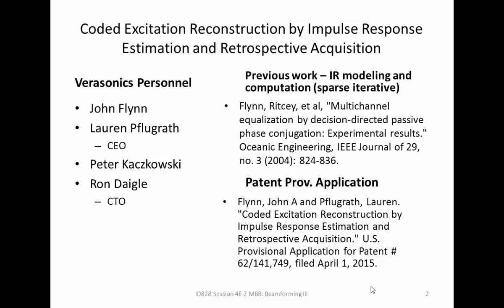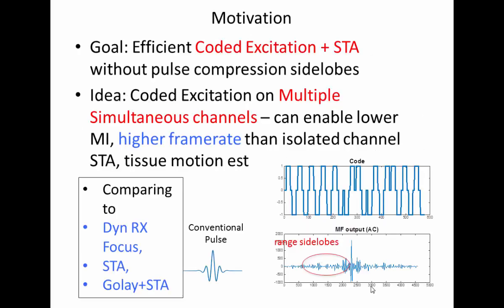This is coded excitation reconstruction implemented through impulse response estimation and retrospective transmission and beamforming. There's an earlier paper applying a similar technique to ocean acoustic channels for telemetry experiments. The goal is to have efficient coded excitation synthetic transmitted aperture without pulse compression side lobes, using simultaneous transmitted channels. This can lower the achievable mechanical index, achieve a higher frame rate than isolated channel synthetic transmit aperture with Golay coding, and also enable tissue motion estimation processing.